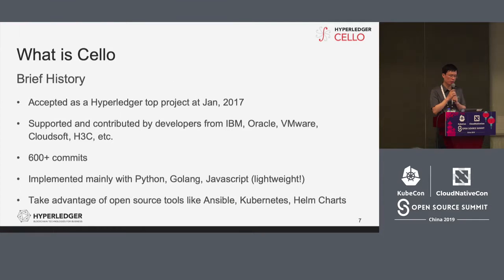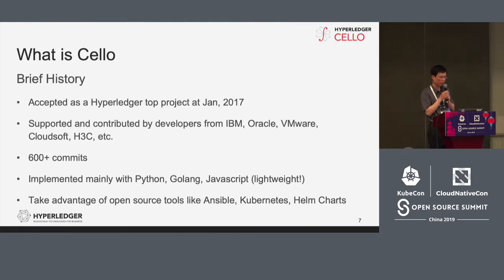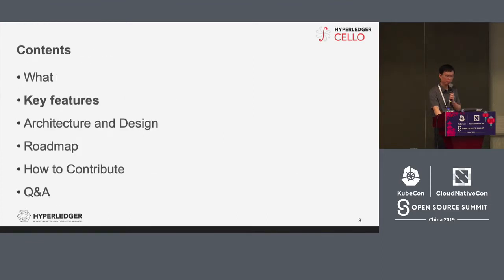In January 2017, Cello was accepted as a Hyperledger top project. It has some sub-projects. The major contributors are from IBM, Oracle, Firmware, H3C, CloudSoft, and so on. We have more than 600 commits. The languages are Python, Golang, and JavaScript. We also take advantage of frameworks including Ansible, Kubernetes, and Helm charts to help with the deployment of Cello, including the Ansible agent.